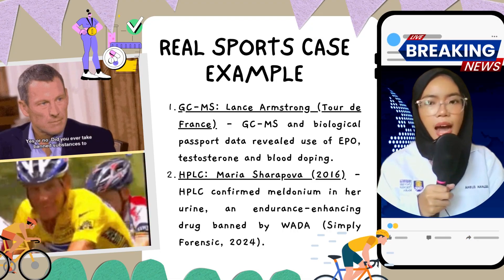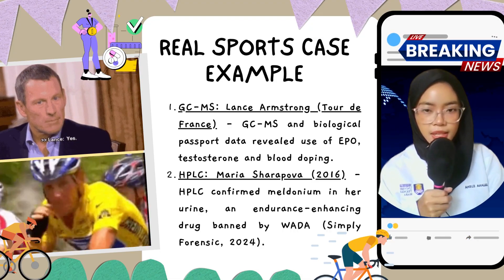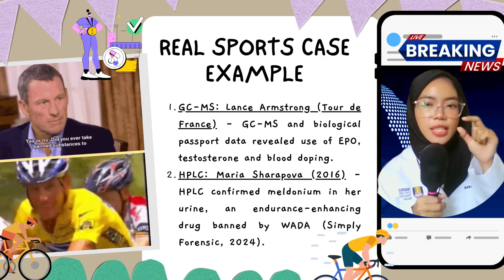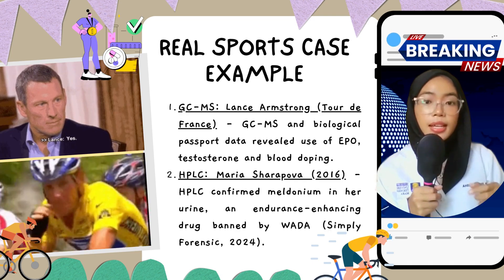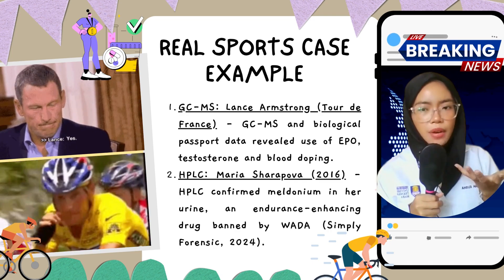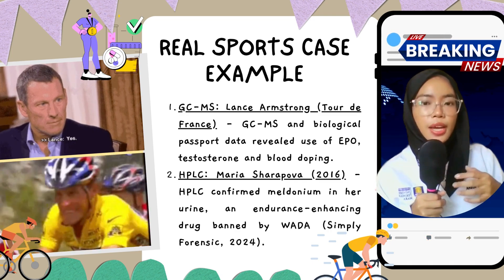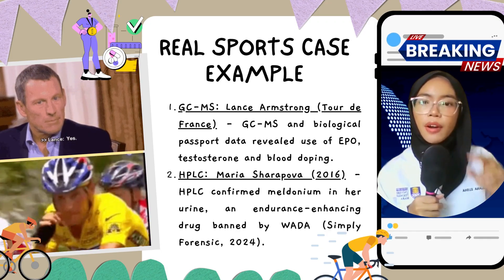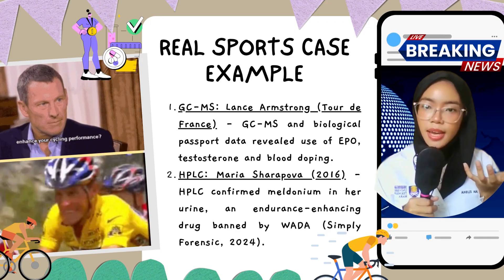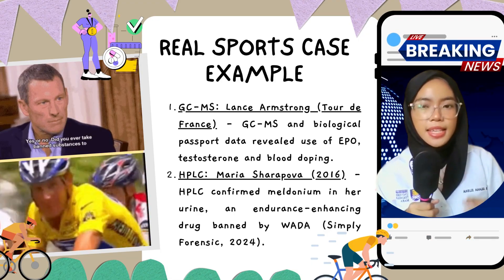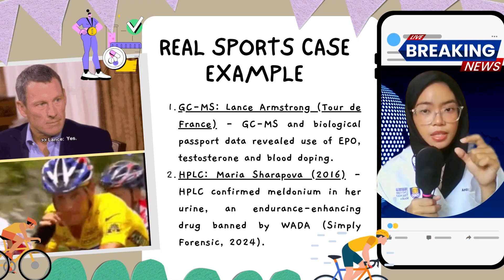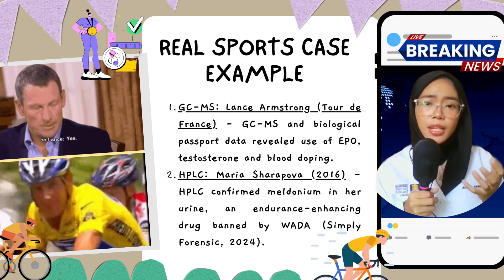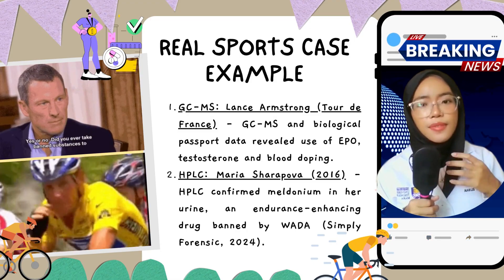Lance Armstrong used banned substances like EPO and testosterone. GC-MS detected synthetic steroids in his stored urine samples. This result, combined with biological passport data, led to a lifetime ban and the stripping of his seven Tour de France titles. The second case is Maria Sharapova. In 2016, at the Australian Open, HPLC detected meldonium, a banned substance, in Sharapova's urine. Even though she claimed she wasn't aware of the ban, the result led to a 15-month suspension.